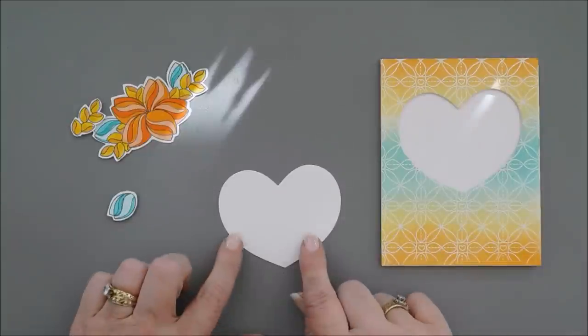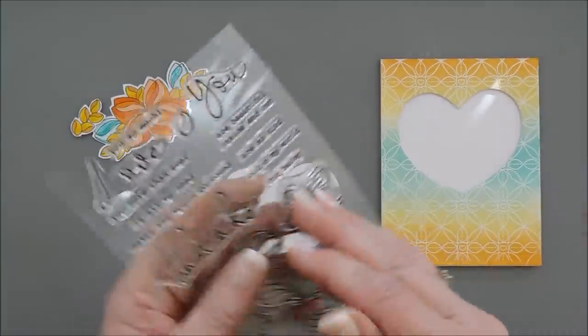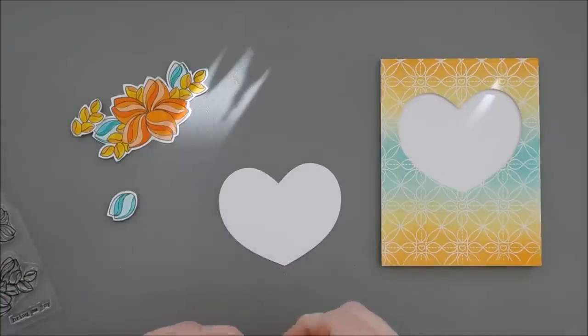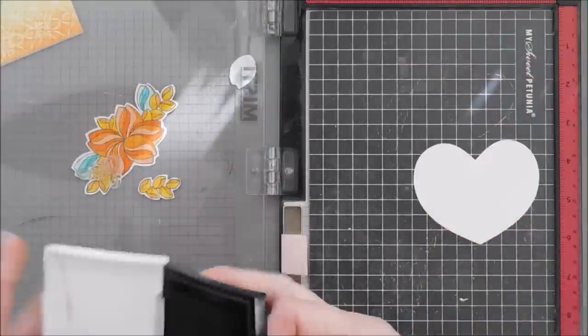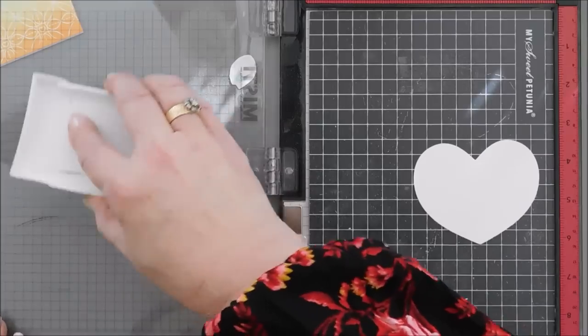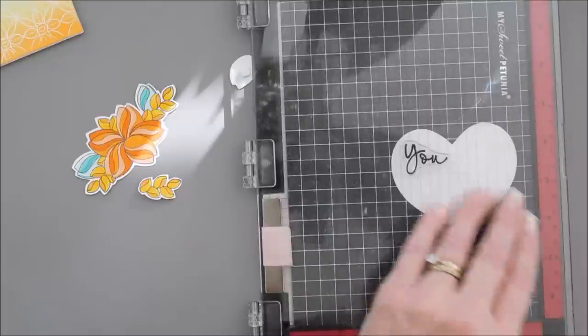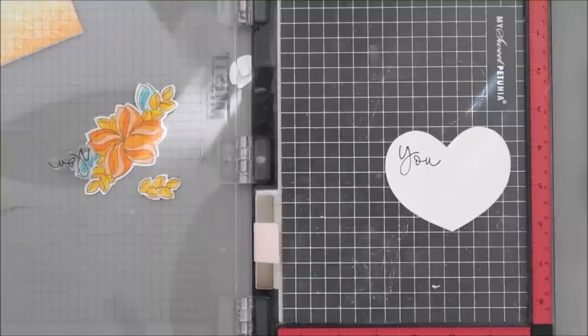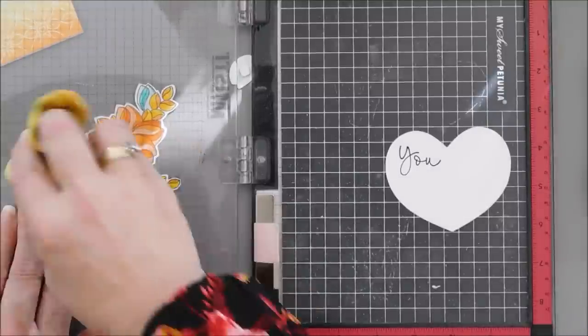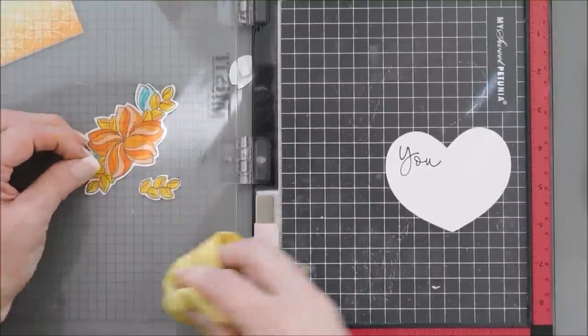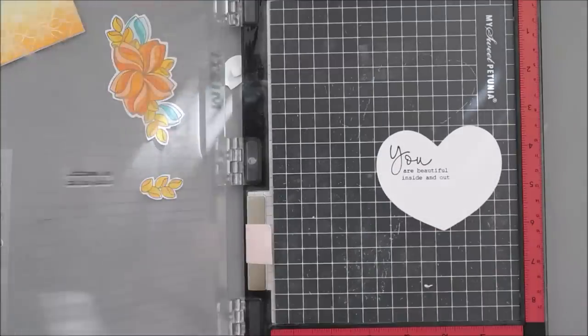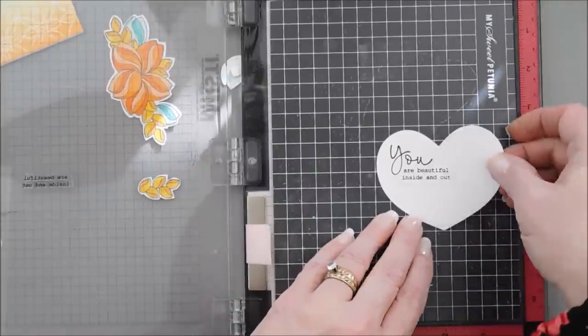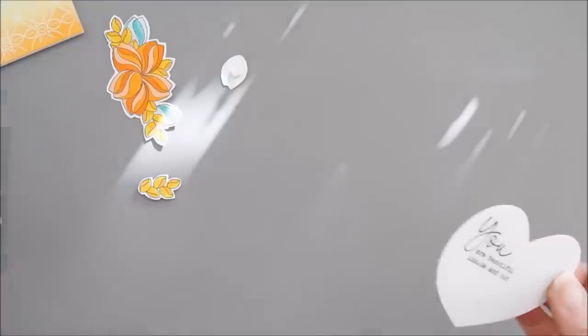Wonderful. And then for my sentiment, we are going to stamp you are beautiful inside and out. I think that's just lovely. I'm going to ink it up with my VersaFine ink, and we'll stamp this to the left. And then I'll take the second part of my sentiment. This is our beautiful inside and out. Lovely. Okay. So we have our sentiment done.